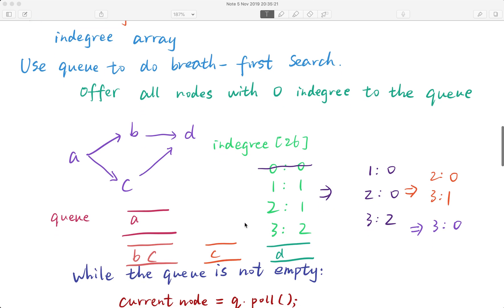First we need an in-degree array. That means for every node we will count what's the in-degree of this node. For this given graph, we have an edge from a to b and an edge from a to c.